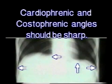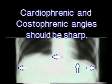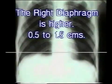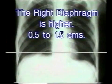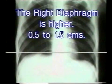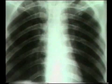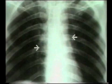Then inspect the cardiophrenic and costophrenic angles. They should be sharply defined. Any obliteration of any of these angles is pathological. The right diaphragm should be 0.5 to 1.5 cm higher than the left diaphragm, and both should be smoothly curved.